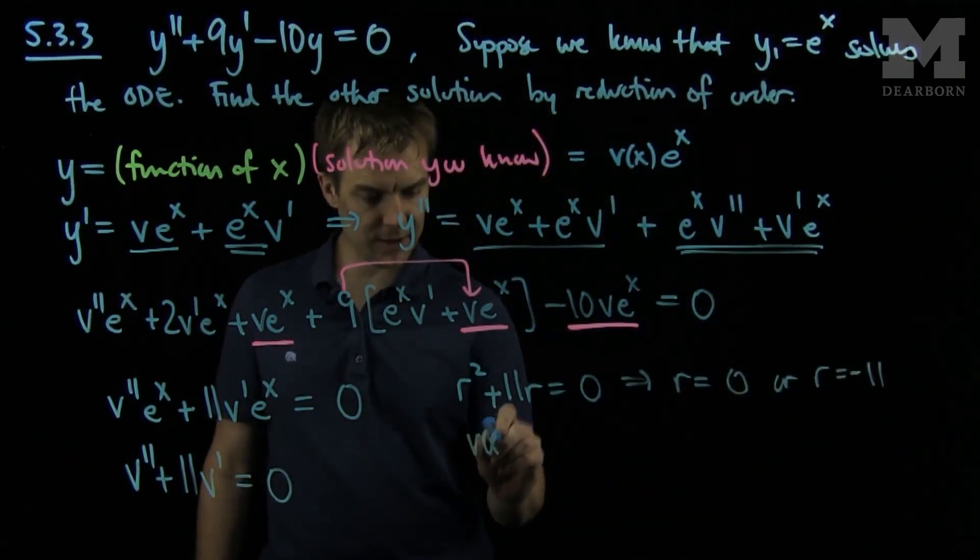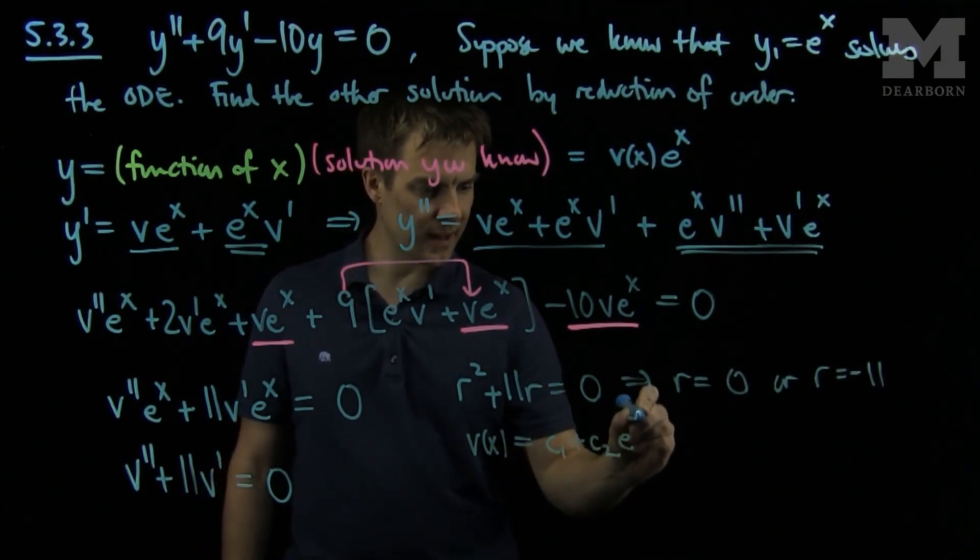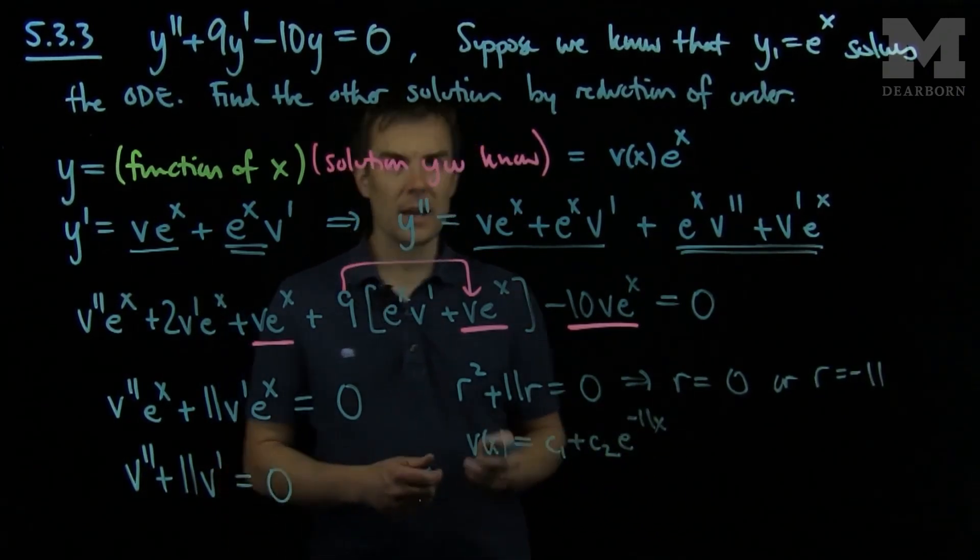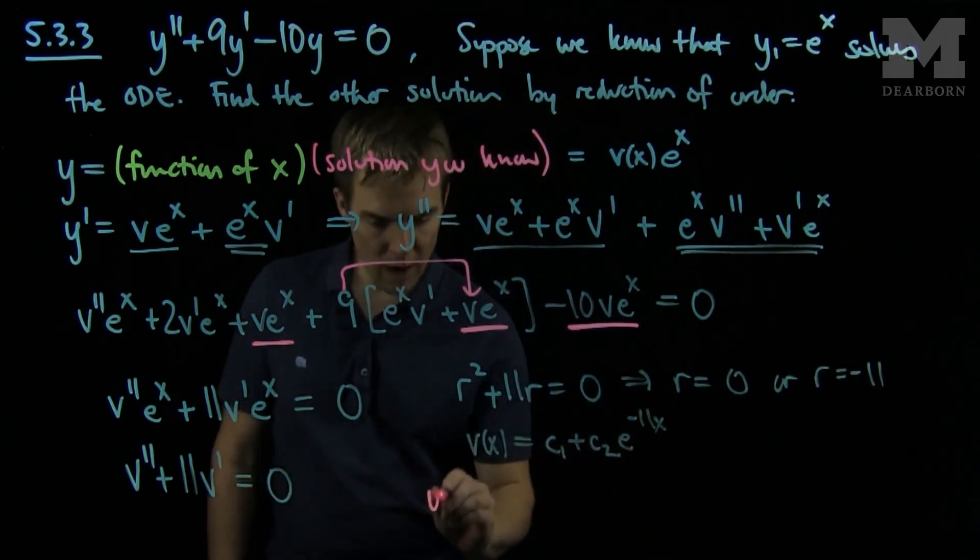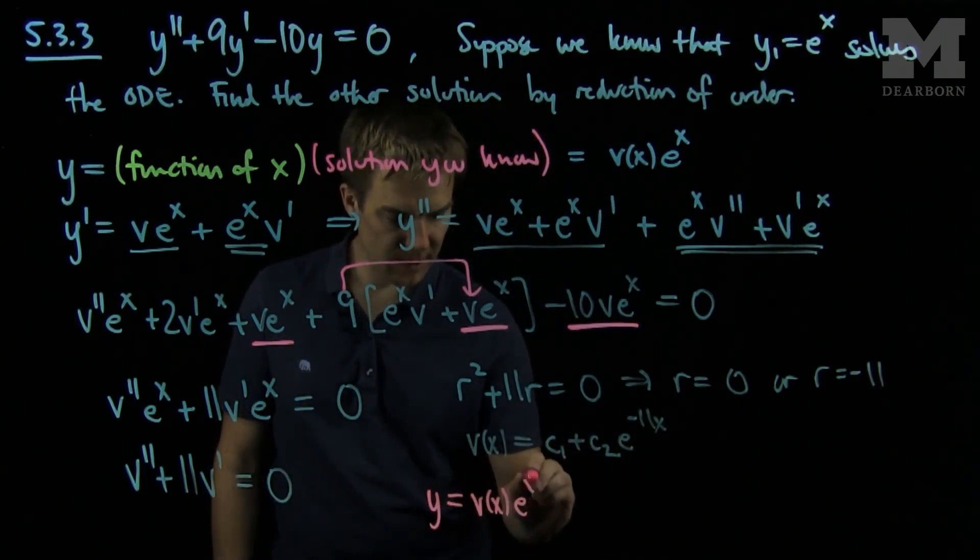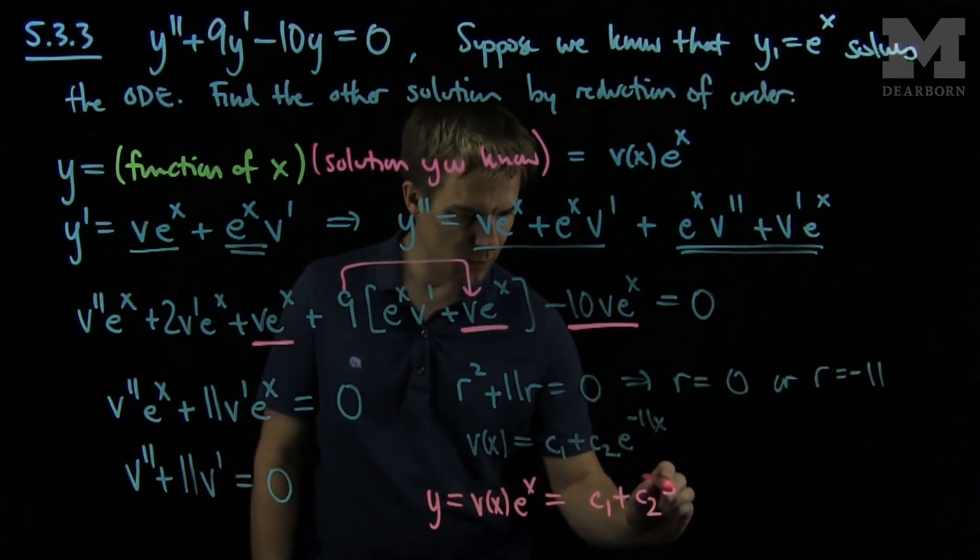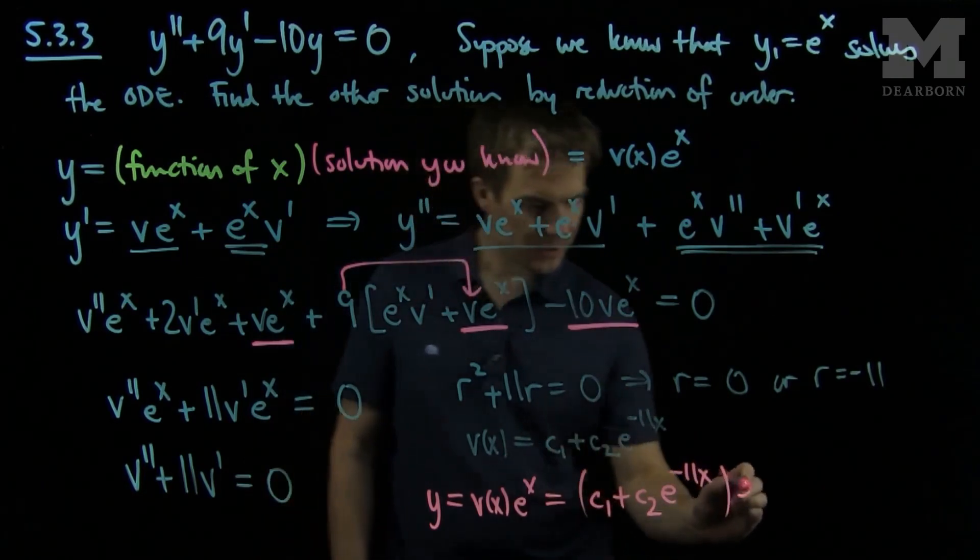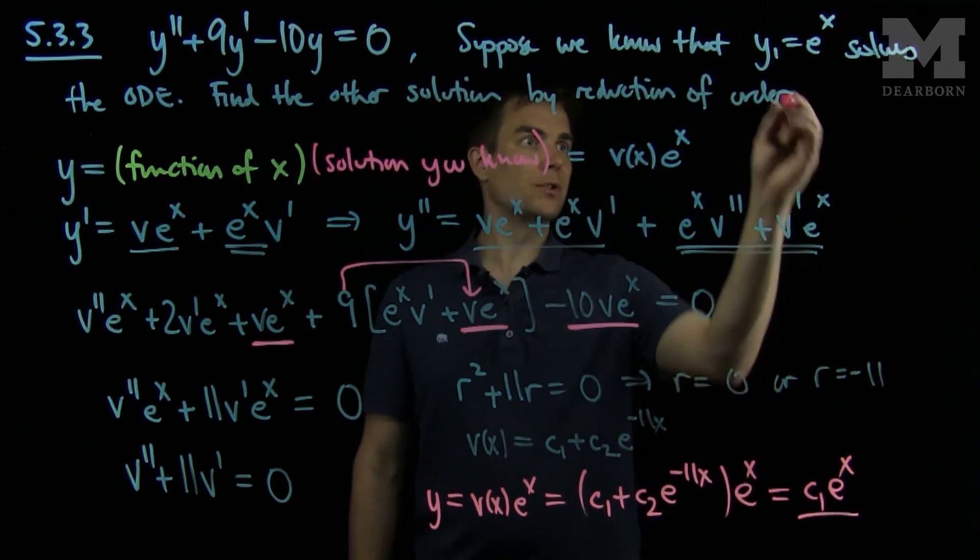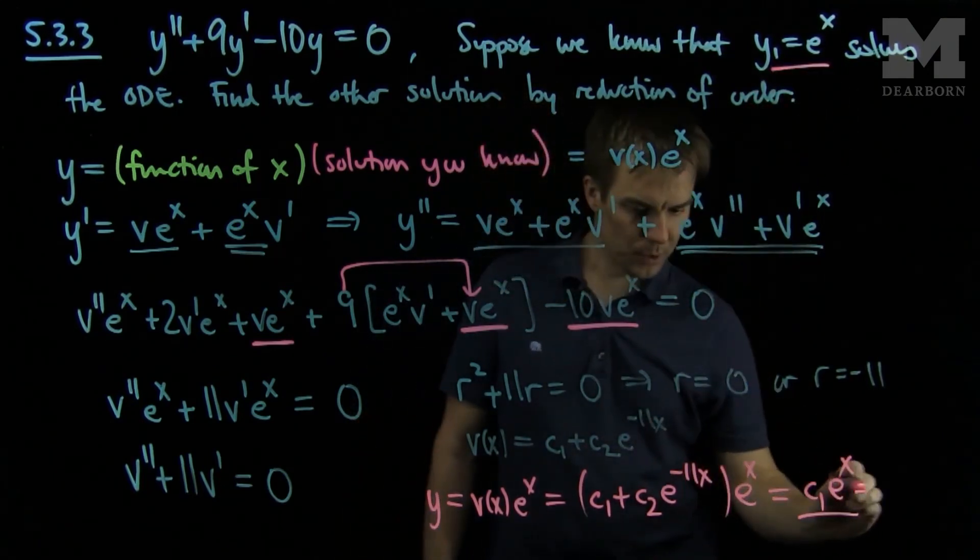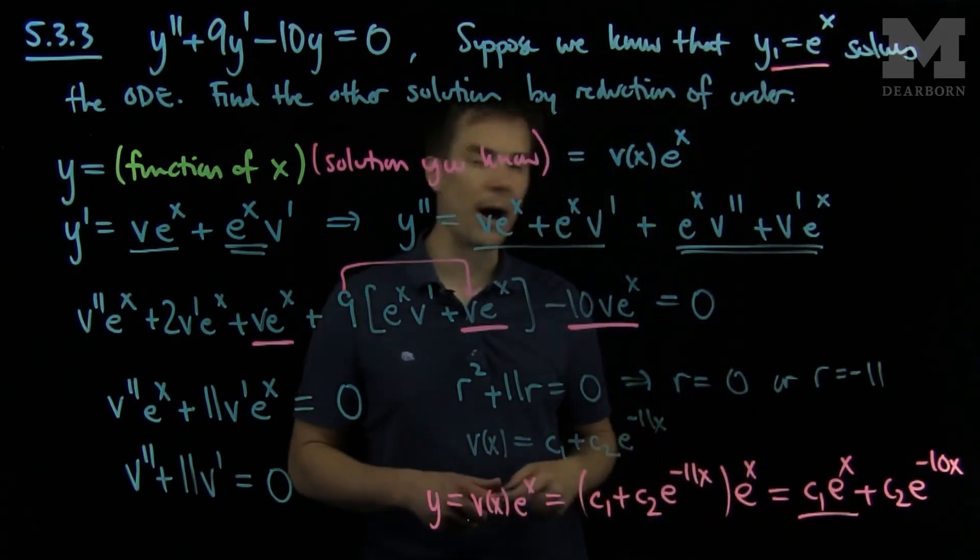So it tells me that v of x is going to be c1 plus c2 e to the negative 11 x. And now we have to multiply this by e to the x, so y is equal to v of x times e to the x which is going to be c1 plus c2 e to the negative 11 x times e to the x, which will simplify to c1 e to the x, that was the solution we started with, plus c2 e to the negative 10 x, which is the solution we found through the reduction of order method.